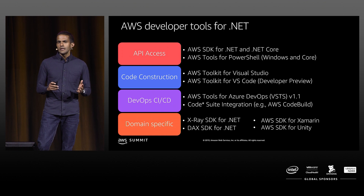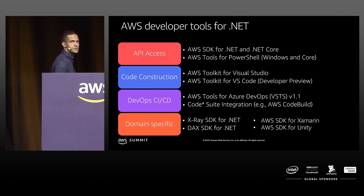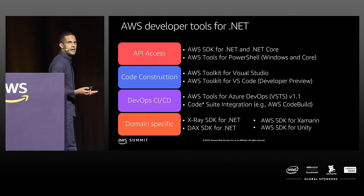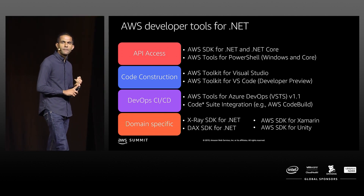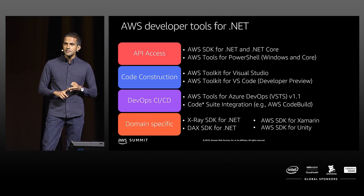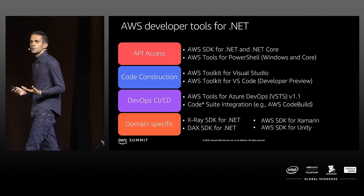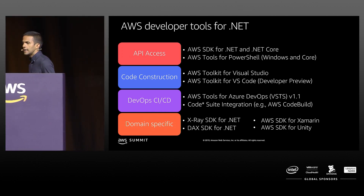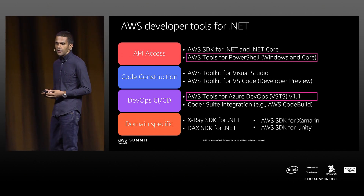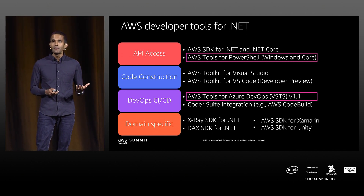AWS provides a lot of tooling and integration for Microsoft shops or Microsoft developers. We provide SDKs for .NET framework. You can program with PowerShell or command line interfaces, and there's tooling available for Visual Studio and Visual Studio Code. In this session, we are going to focus mainly around AWS tools for PowerShell and also AWS extensions available in the Azure DevOps marketplace.